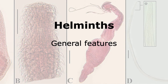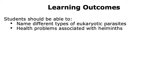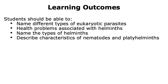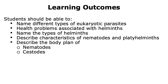In this talk, we're going to learn about the general features of helminths. We will begin with learning about different types of eukaryotic parasites and then focus on helminths. We will learn about the different types of helminths and the characteristics of nematodes and platyhelminths. We will also learn the body plan of nematodes, cestodes, and trematodes.